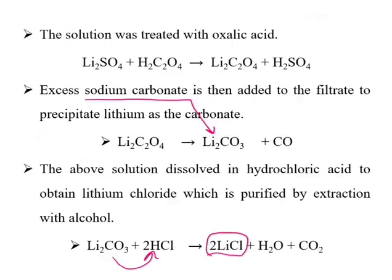The solution containing Li₂SO₄ and Al₂(SO₄)₃ is then treated with oxalic acid. Oxalic acid reacts with lithium sulphate to form soluble lithium oxalate, while aluminium sulphate remains insoluble, allowing separation. From the lithium oxalate in solution, we convert it to lithium carbonate by treatment with sodium carbonate. Then, lithium carbonate reacts with HCl to form LiCl.